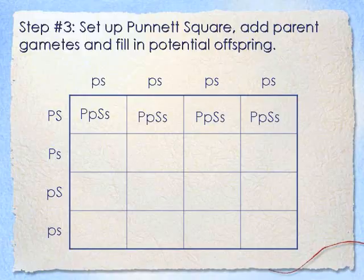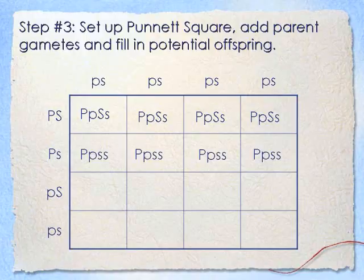Now I'm going to fill across the first row. I'm pairing big P big S with little p little s. The big P will go with little p, giving me big P, little p for all four. And then my big S will go with little s, giving me big S, little s for all four. To fill the second row, I'm adding big P little s with little p little s. So big P goes with little p all the way across, and I'll have little s, little s all the way across.